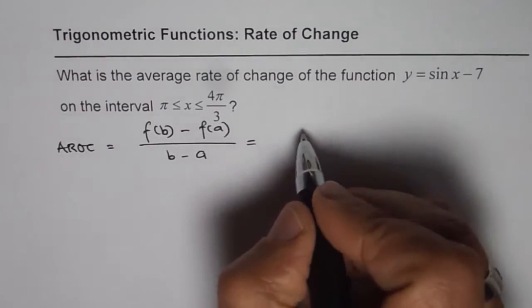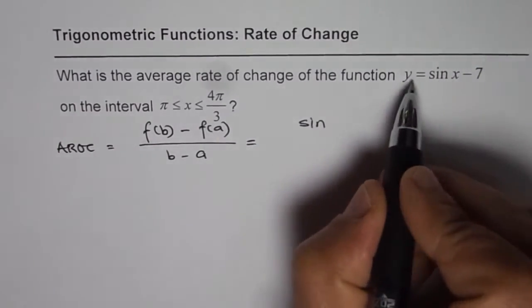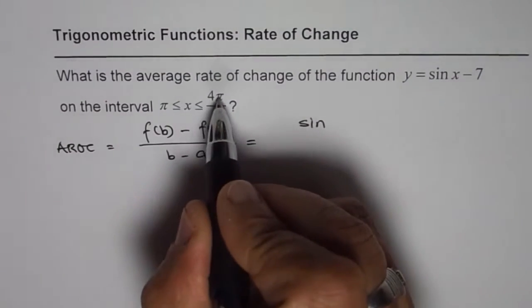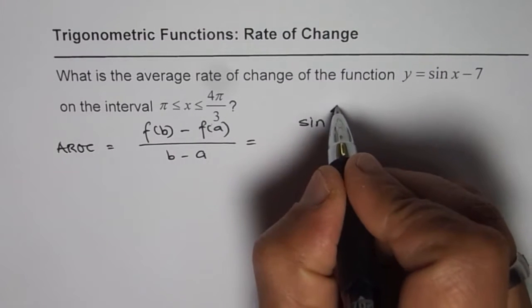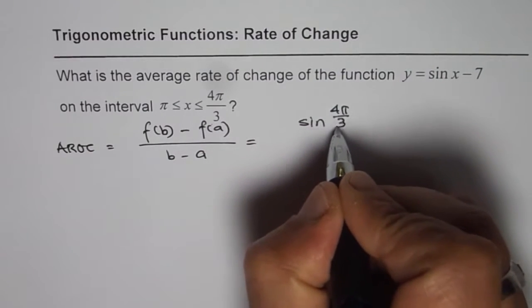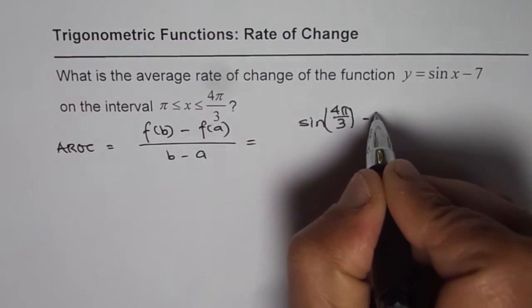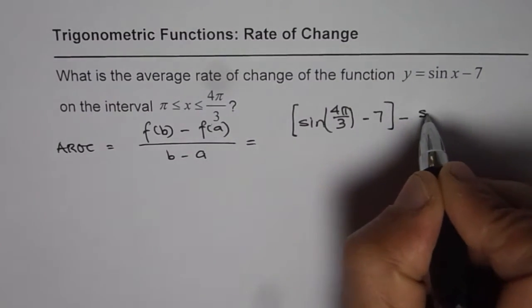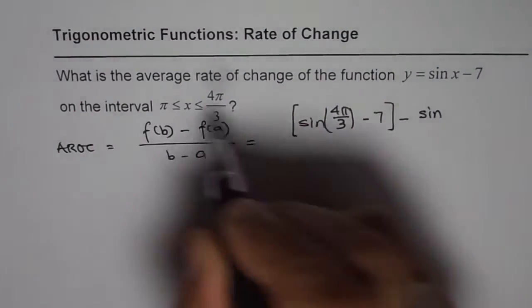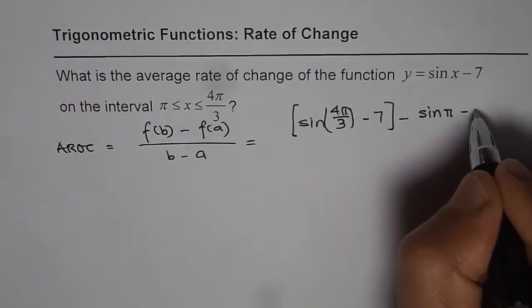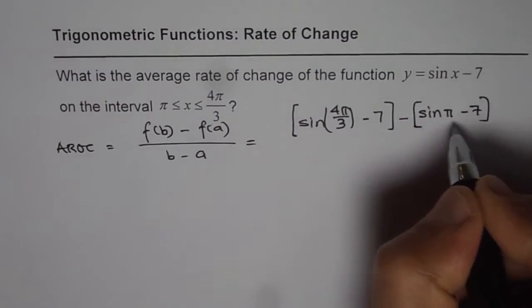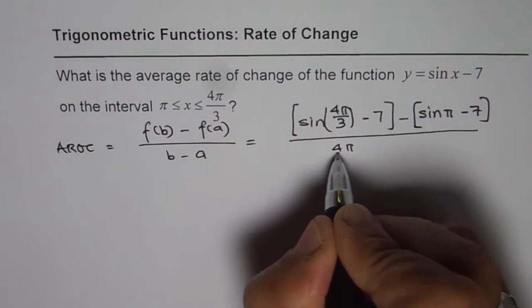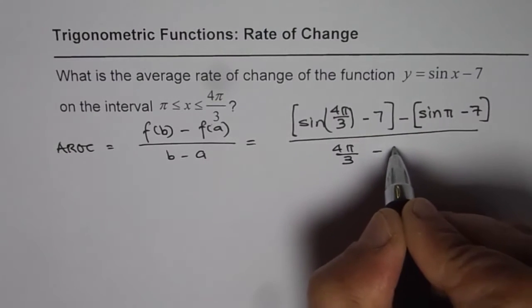The function is y equals sine x minus 7. So sine of b is 4 pi by 3 for us, 4 pi by 3 minus 7. That is f of b minus sine of pi minus 7, that is f of a, divided by 4 pi by 3 minus pi.